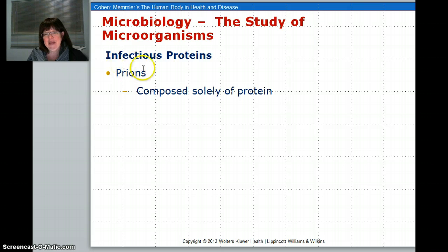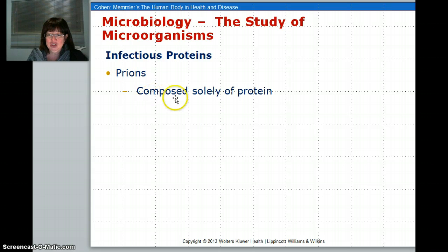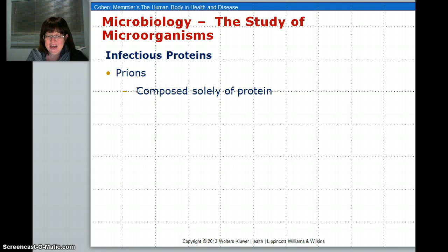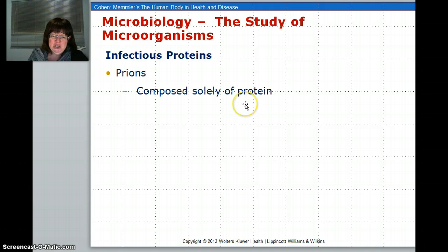Another thing is a prion, which is an infective protein. The protein comes in and changes the composition of other proteins. It's not even a cell. An example is BSE — bovine spongiform encephalitis — which is mad cow disease. A couple of cases completely destroyed the Alberta beef economy.